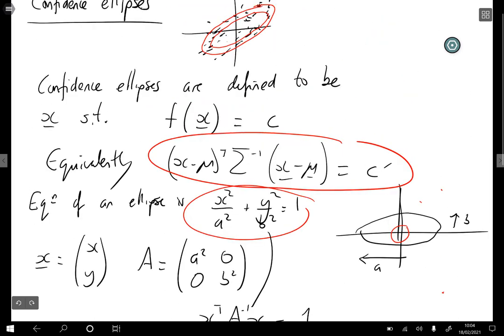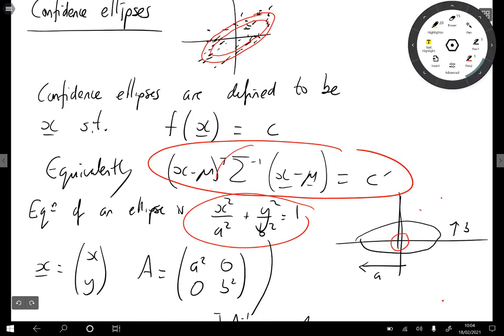Now in the expression we had here, Σ here might not be a diagonal matrix like it is here. So what's the effect of having a non-diagonal matrix? Well the effect is to rotate the ellipse. So rather than being parallel to the coordinate axis it's parallel to some other lines.